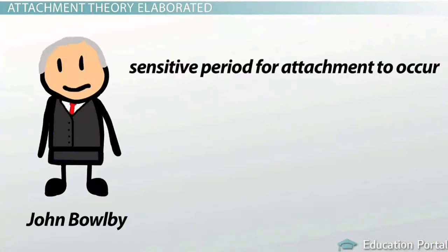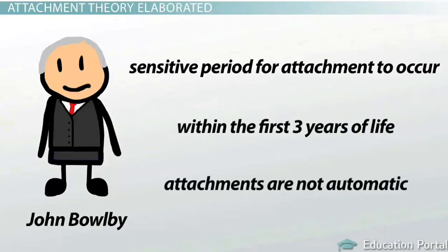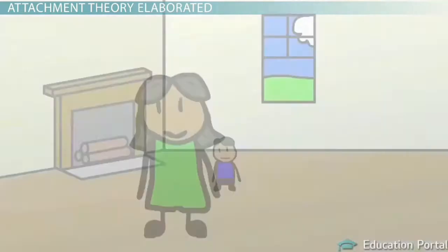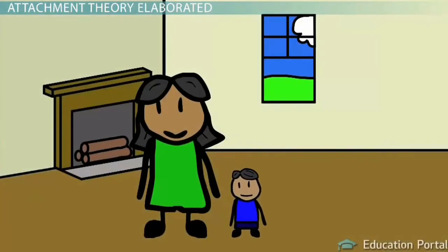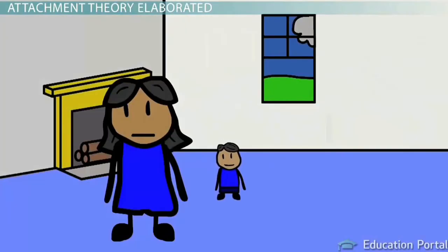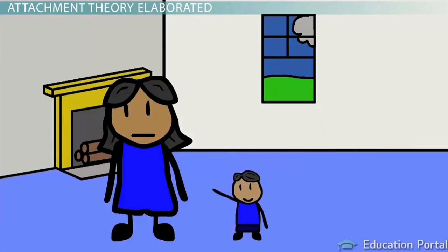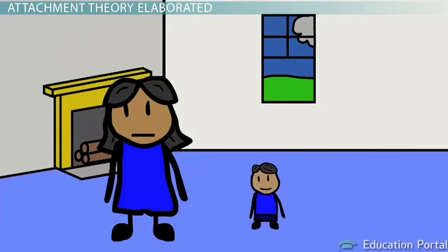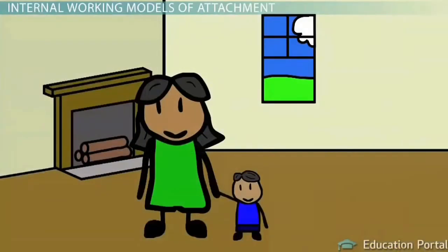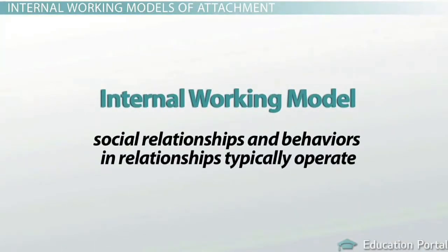According to Bowlby, there is a sensitive period for attachment to occur, and that is within the first three years of life. Attachments are not automatic either — in order for an attachment to occur there must be a reciprocal interaction between parent and child. If a caregiver is unresponsive to the child's attempts for affection or cries, the child may become unresponsive to that caregiver's presence. The early attachment between parent and child creates an internal working model of how social relationships and behaviors in relationships typically operate.